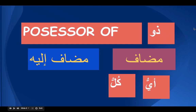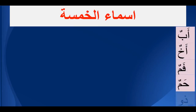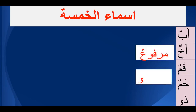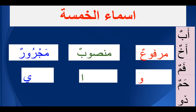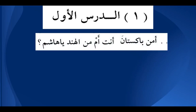Dhu has another speciality — it is among asma'ul khamsa, the five special nouns: abun, akkhun, famun, hamun, and dhu. The speciality is that when they are mudaf: the sign of marfu is waw, the sign of mansoob is alif, and the sign of majroor is ya. Because dhu is always mudaf, you will always see waw as the sign of marfu and alif as the sign of mansoob.